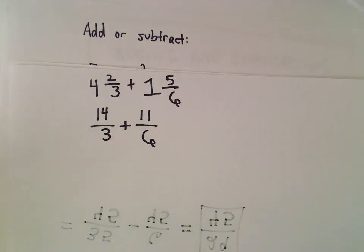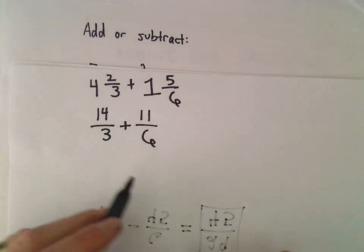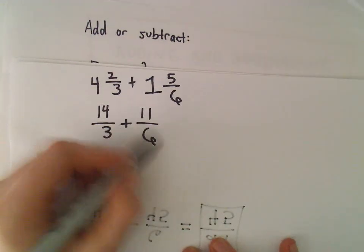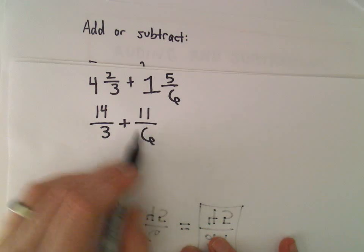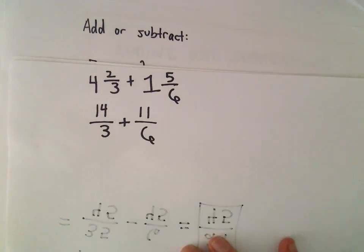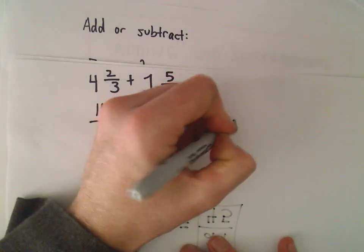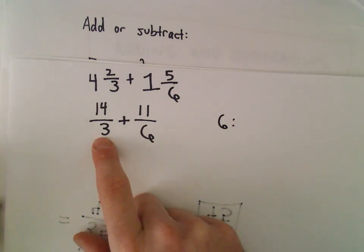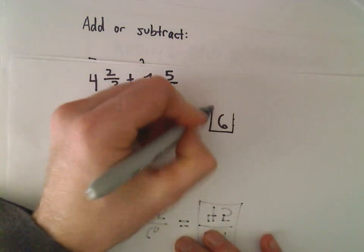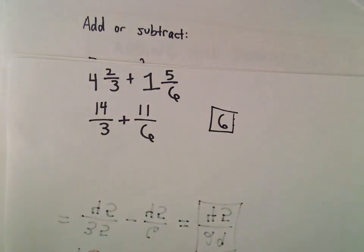I'm thinking, what's the least common denominator? So I look at my largest denominator, the largest denominator of my fraction, which is 6. Well, clearly 6 is divisible by 6. Is 6 divisible by 3? Yes, it is. So that's going to be our least common denominator.